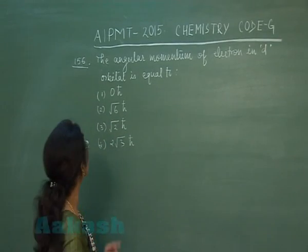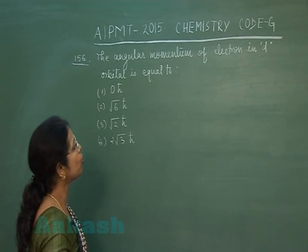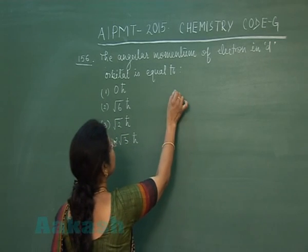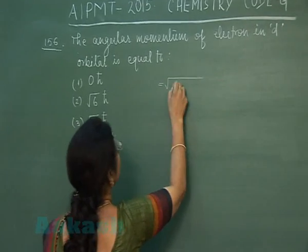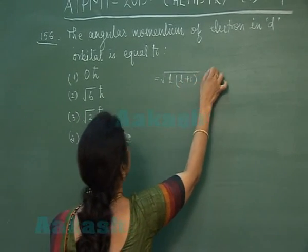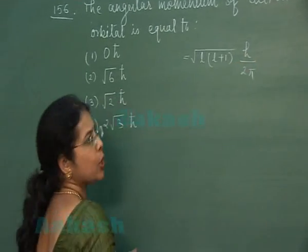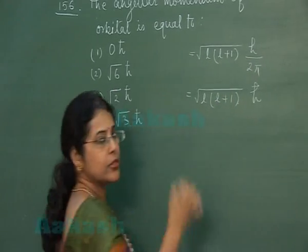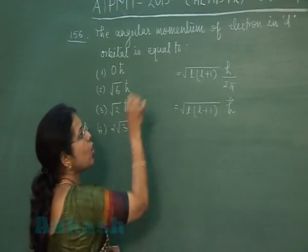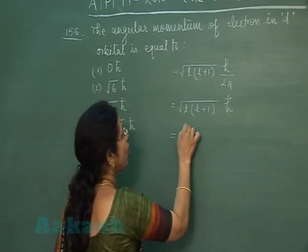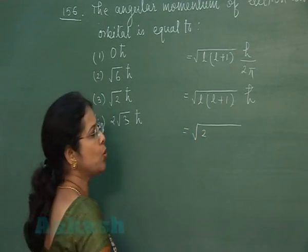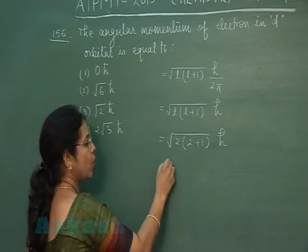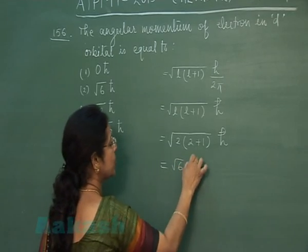Question number 156: The angular momentum of an electron in a d orbital is equal to? To calculate angular momentum in any orbital, we apply the formula: √(l(l+1)) × h/2π, which can also be written as √(l(l+1)) × ℏ. For any d orbital, the value of l is 2. Substituting: √(2(2+1)) = √6. So the angular momentum equals √6 ℏ.